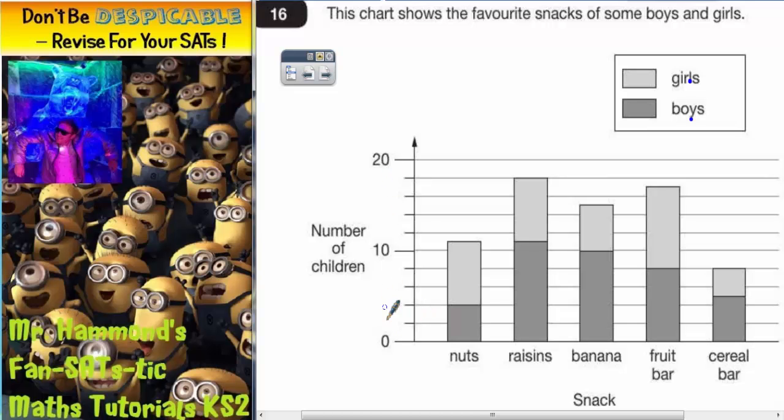We've got a scale up the side that goes from 0 to 20 but we've got several small gaps in between. From 0 to 10 that's a gap of 10 but we've got 1, 2, 3, 4, 5 small gaps in between. So we need to work out what each small gap is worth. If we share 10 by 5, 10 divided by 5 is 2. So each gap has to be worth 2.